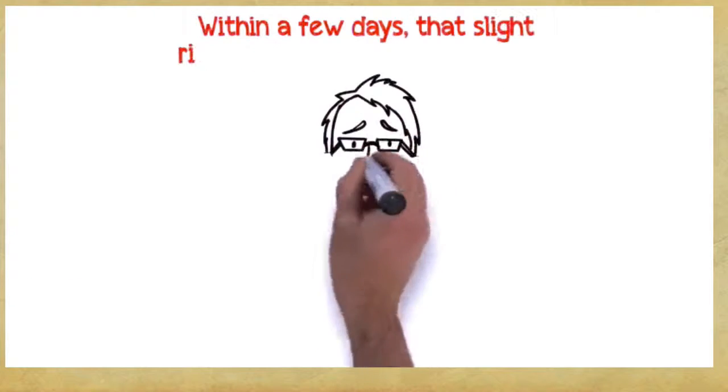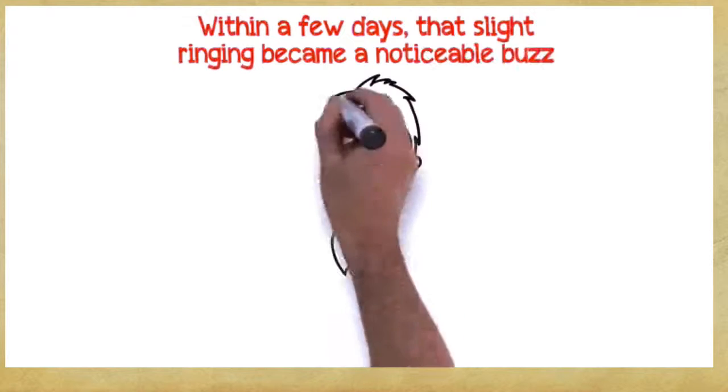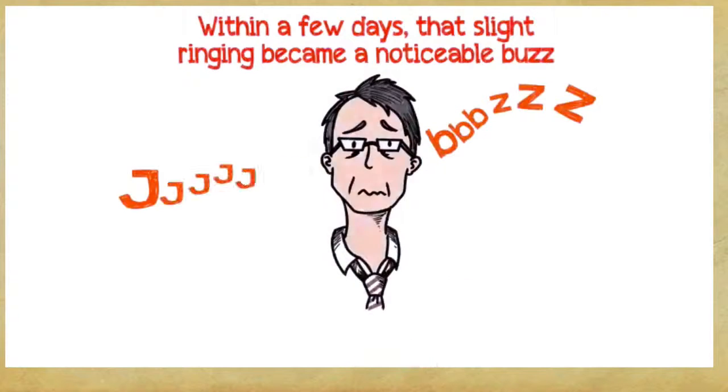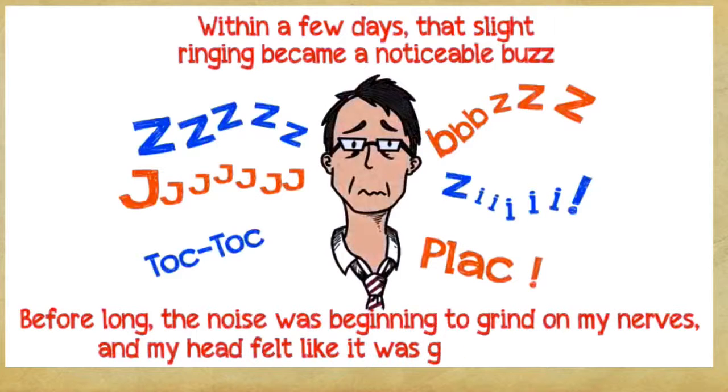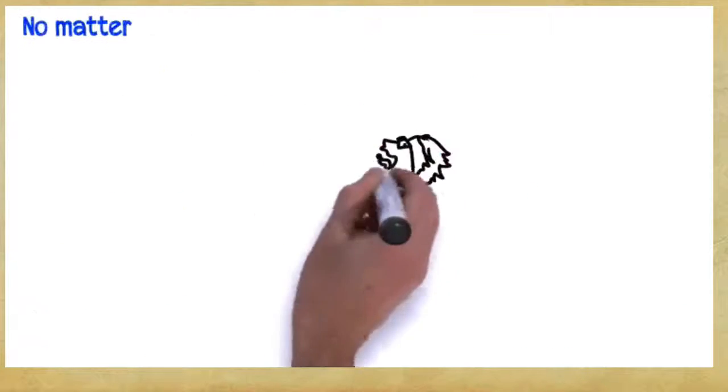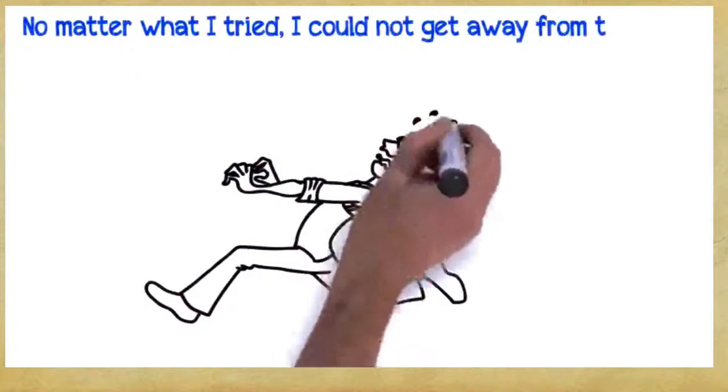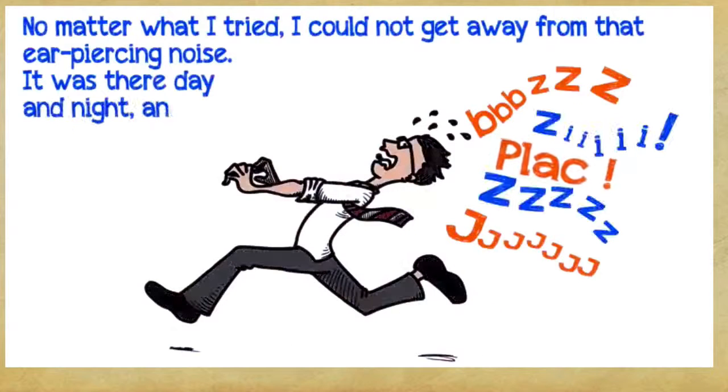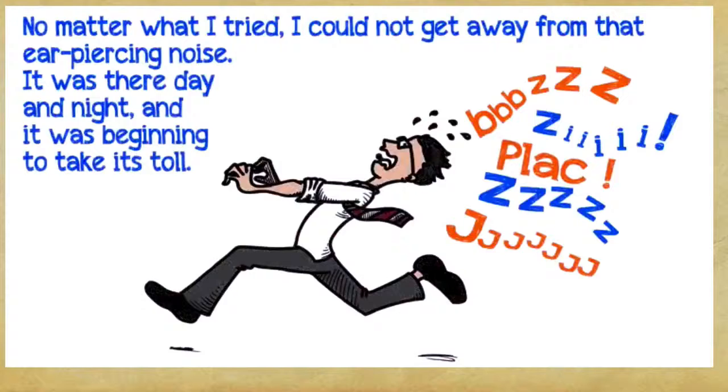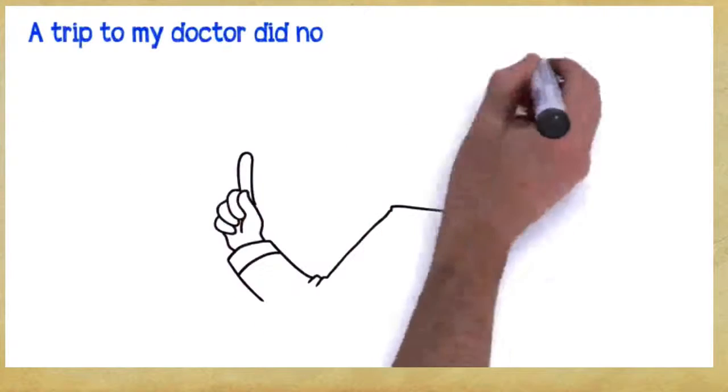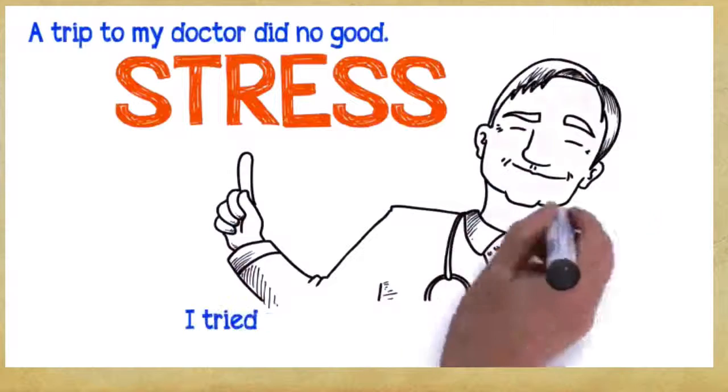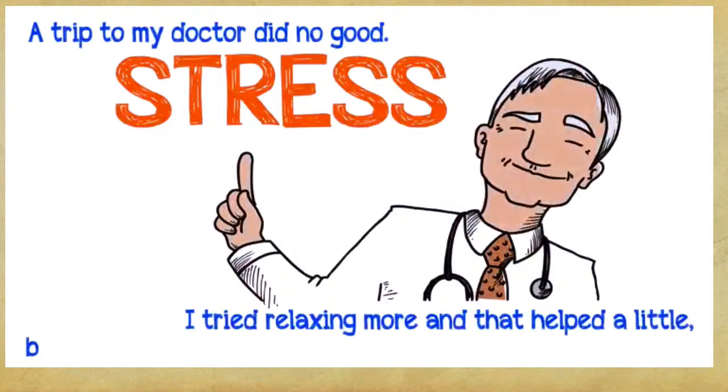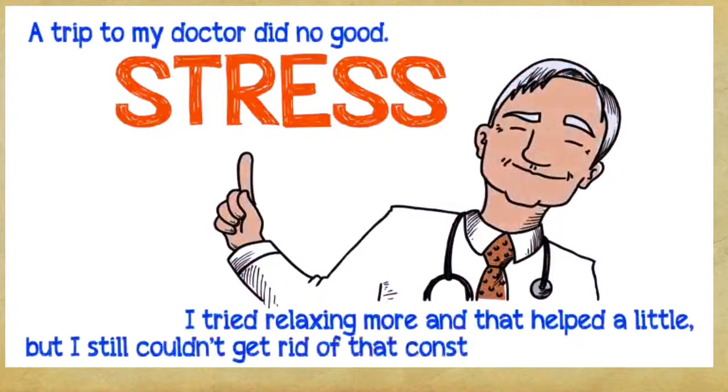Within a few days, that slight ringing became a noticeable buzz, followed periodically by loud bangs. Before long, the noise was beginning to grind on my nerves, and my head felt like it was going to explode. No matter what I tried, I could not get away from that ear-piercing noise. It was there day and night, and it was beginning to take its toll. A trip to my doctor did no good. He thought it was just a migraine induced by stress. I tried relaxing more, and that helped a little, but I still couldn't get rid of that constant buzz in my ears.